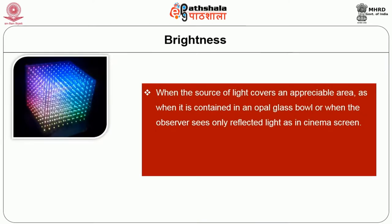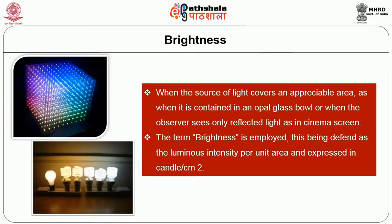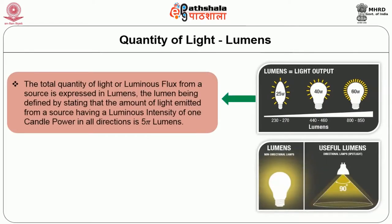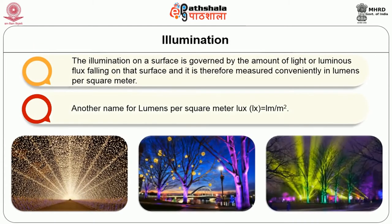Brightness: when the source of light covers an appreciable area, as when it is contained in an opal glass bowl, or when the observer sees only the reflected light as in a cinema screen, the term brightness is employed. This is defined as the luminous intensity per unit area and expressed in candle power per meter square. Quantity of light — lumen: the total quantity of light or luminous flux from a source is expressed in lumens. The lumen is defined such that the amount of light emitted from a source of one candle power in all directions is 4π lumens. An ordinary 60-watt lamp will have an output of about 700 lumens. Illumination on a surface is measured in lumens per square meter, another name for which is lux.